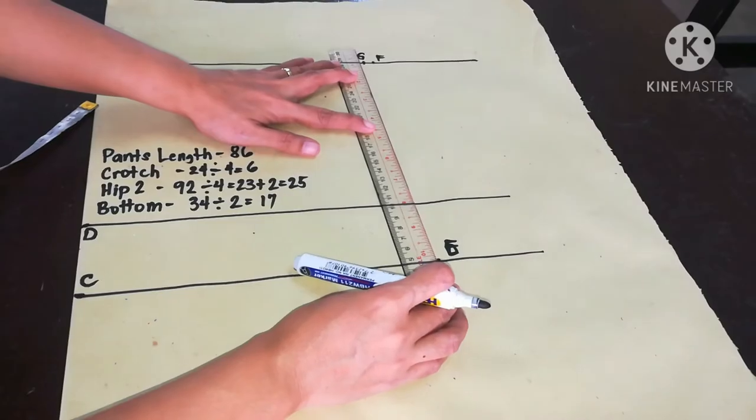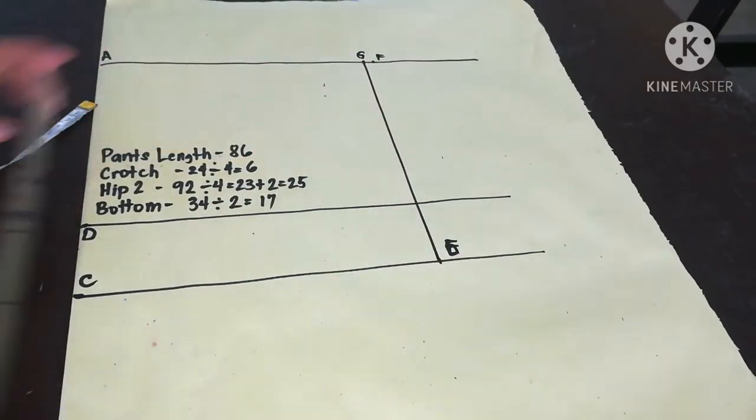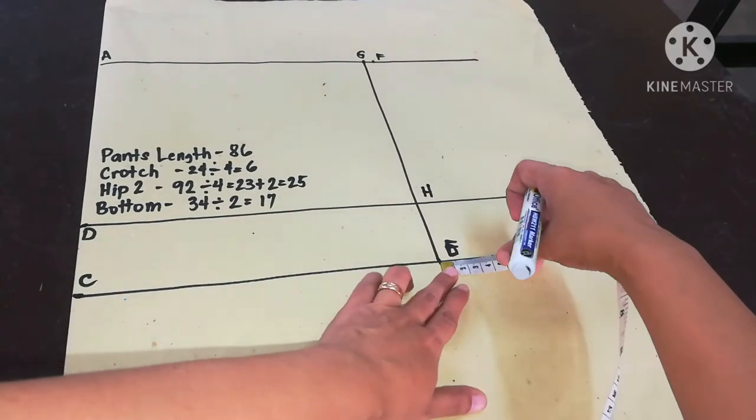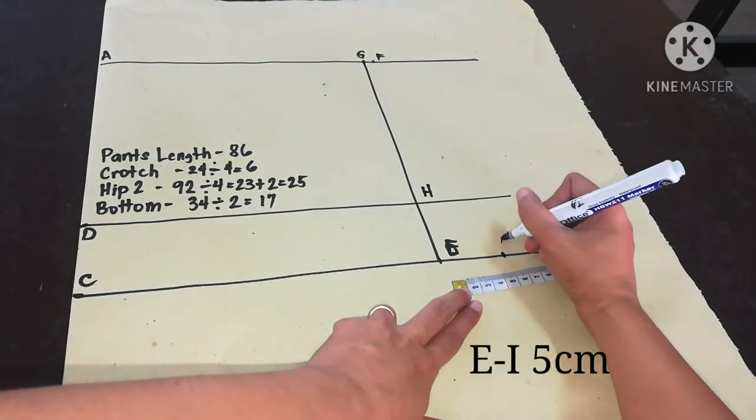Now connect G and E with the use of ruler. And then mark the intersection as point H. And then measure 5 cm from point E and mark it point I.